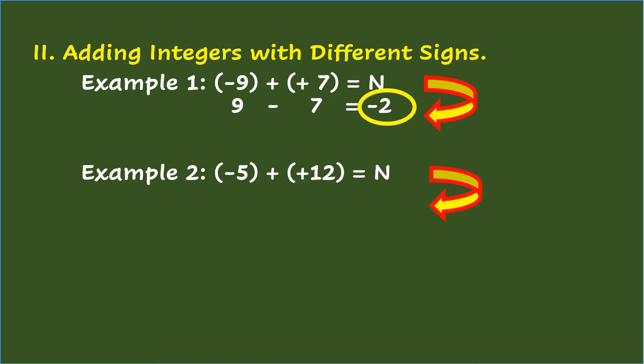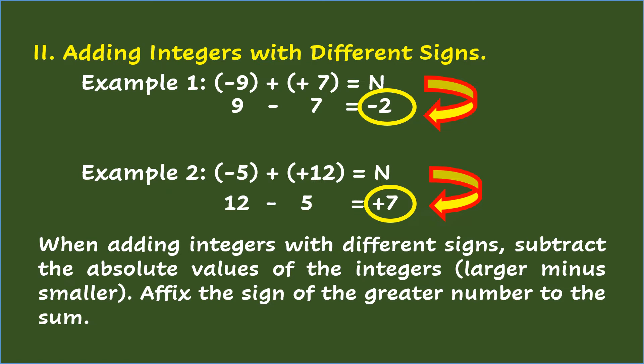Example 2: Negative 5 plus positive 12 equals n. Subtract the smaller absolute value from the larger absolute value. So 12 (for positive 12) minus 5 (for negative 5) is 7. Then affix the sign of the greater number to the sum. The greater number here is 12 with a positive sign. So negative 5 plus positive 12 equals positive 7. When adding integers with different signs, subtract the absolute values (larger minus smaller) and affix the sign of the greater number to the sum.